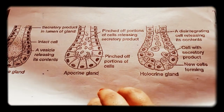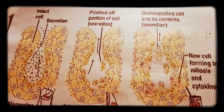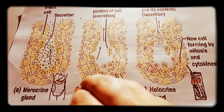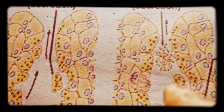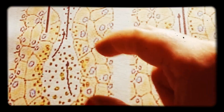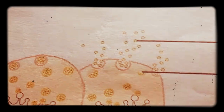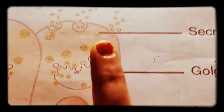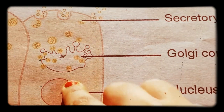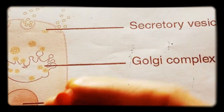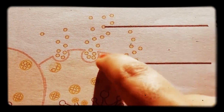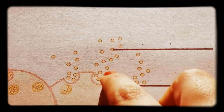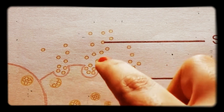To review merocrine, apocrine, and holocrine: in the image we can clearly see that in holocrine the whole cell has degenerated, in apocrine a portion of the cell is pinched off, and in merocrine only secretions are released into the lumen — not vesicle membranes. In the merocrine gland, secretions are packaged in vesicles in the Golgi complex, vesicles fuse with the plasma membrane, and secretions are released out.